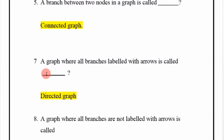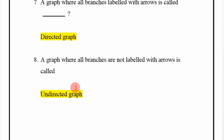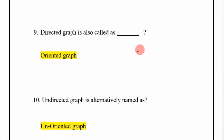A graph where all branches are labeled with arrows is called a directed graph. A graph where all branches are not labeled with arrows is called an undirected graph. Directed graph is also called an oriented graph.